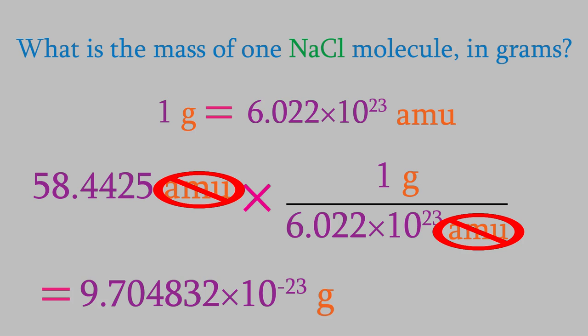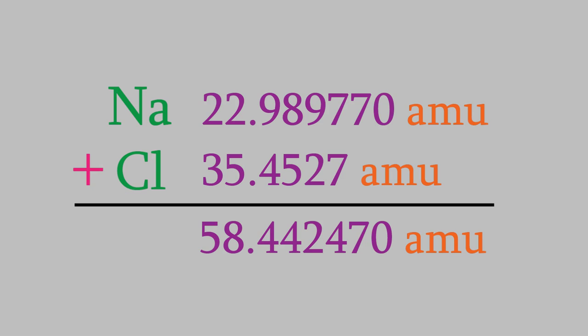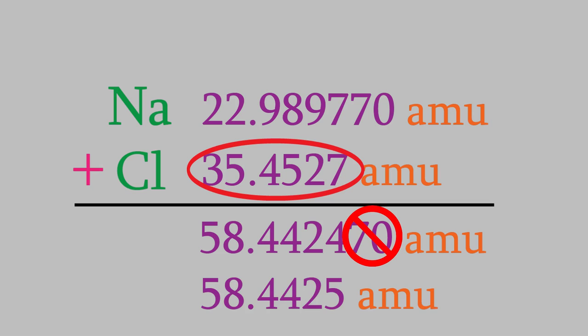Since AMU is in the numerator of our first number, we need it to be in the denominator with the conversion factor so that it'll cancel out. So one gram goes up on top, and 6.022 times 10 to the 23rd AMU goes on the bottom. The AMUs cancel, and we get our answer: 9.704832 times 10 to the minus 23rd grams.